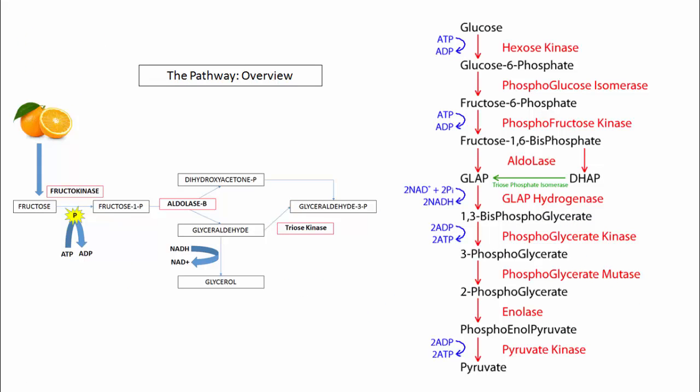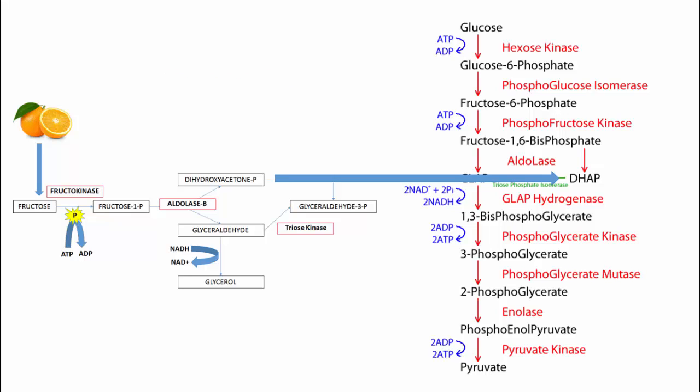We've taken the fructose metabolism pathway and placed it on the left, and the glycolysis pathway on the right, to highlight how these two pathways fit together. One product, dihydroxyacetone phosphate, can enter glycolysis directly. However, the more common intersection is through the end product of fructose metabolism, glyceraldehyde-3-phosphate, entering glycolysis directly itself. From there, glyceraldehyde-3-phosphate continues down the pathway of glycolysis to produce pyruvate and ATP.